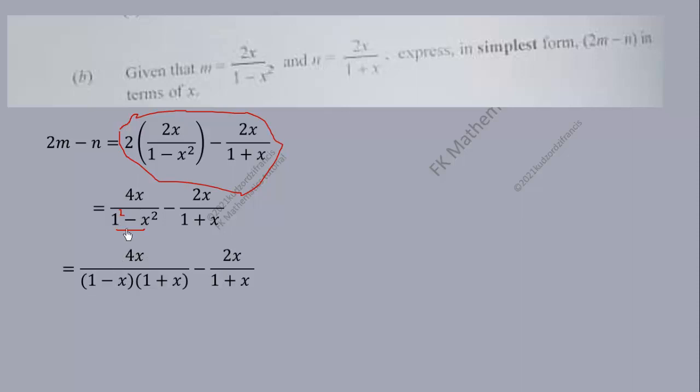So the only thing we have done is the factorization of the denominator here. Now we are going to collect the LCM for this, and the LCM is 1 minus x times 1 plus x. So that is it.